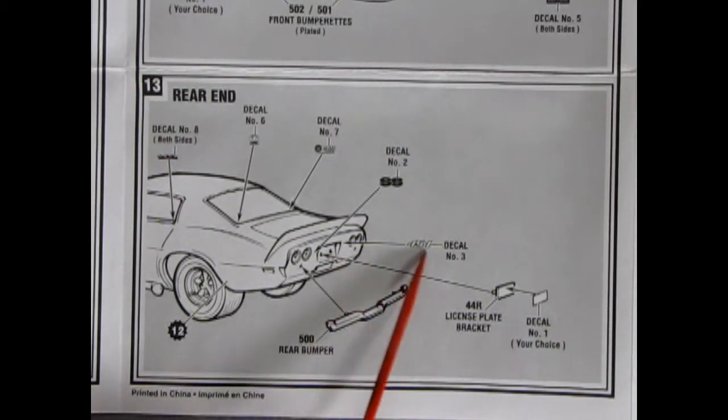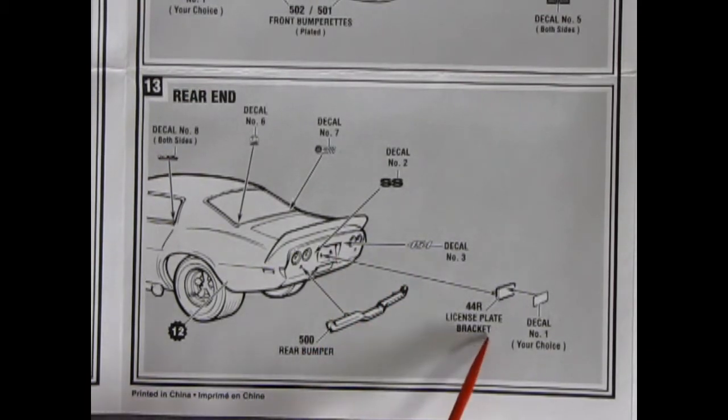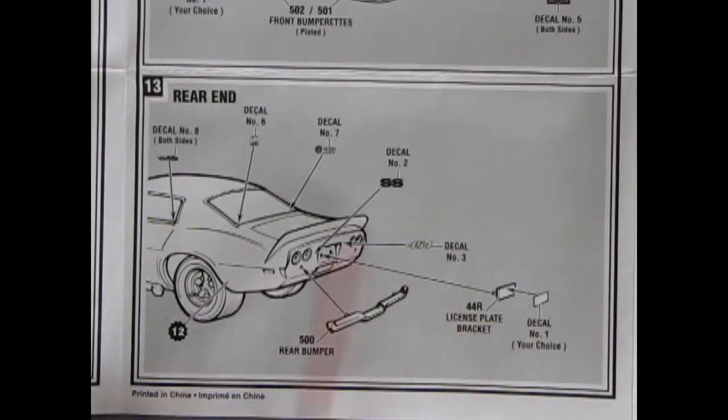Ah, I was right. Found out at the end. It goes in there. The rear bumper, and the license plate bracket, and the decal all going together here at the back.